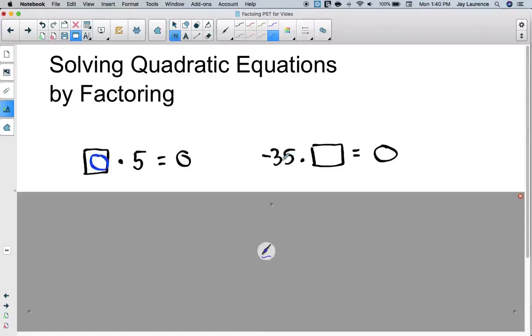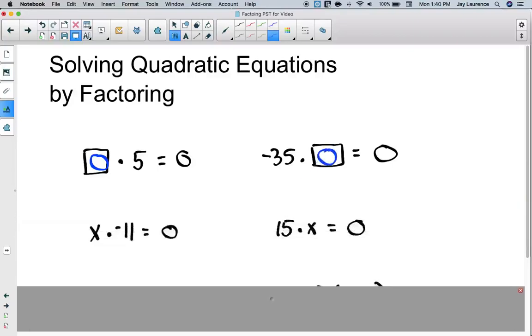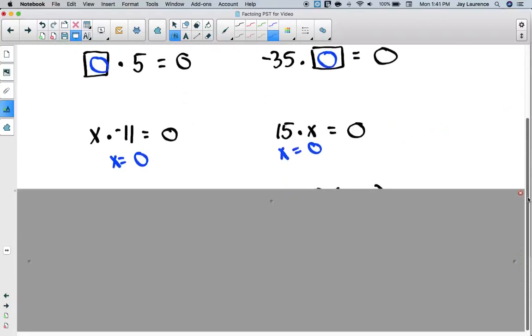Of course, the first problem would be 0, right? 0 times 5 is 0. On this next problem is negative 35 times, and of course, the answer is 0. Now, solve for x. We've got x times negative 11 equals 0, and 15x equals 0. Hopefully, when you solve for x on the first one, you're going to get x equals 0. 0 divided by negative 11 is 0. And on the second one, 0 divided by 15, which of course is 0.